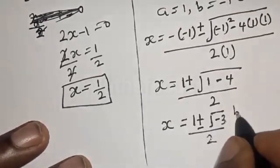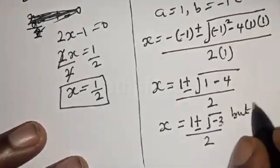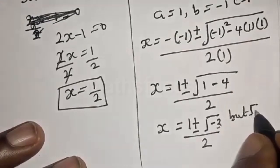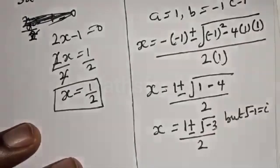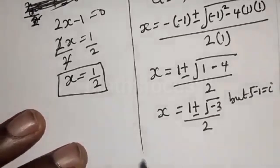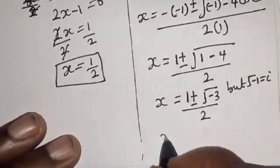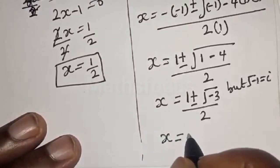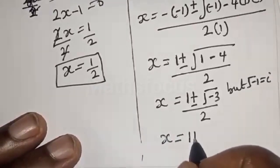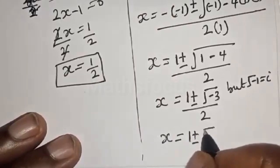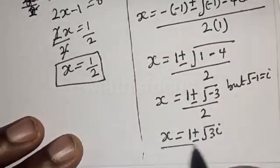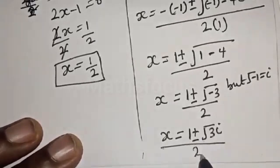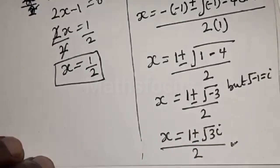Then x equals 1 plus or minus square root of minus 3, over 2. But the square root of minus 1 is equal to i, so x equals 1 plus or minus square root of 3 times i, over 2.